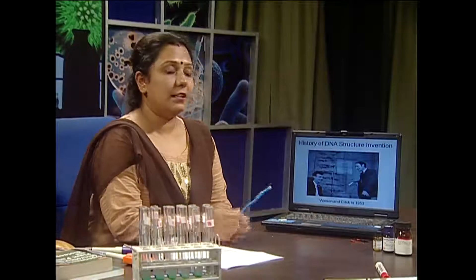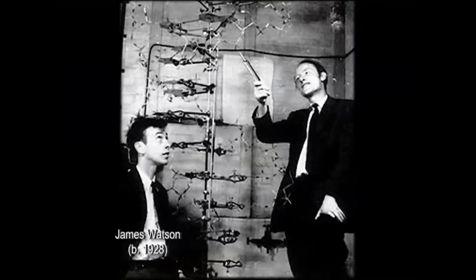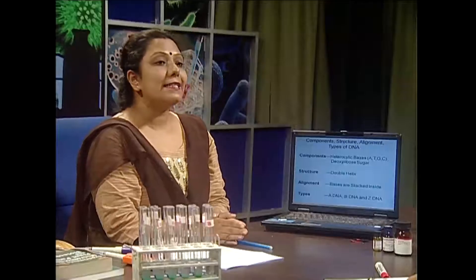In 1953, Watson and Crick proposed the double helical structure of DNA. Types include A-DNA, B-DNA, and Z-DNA.